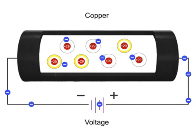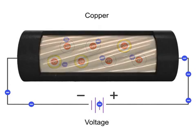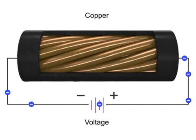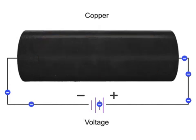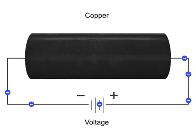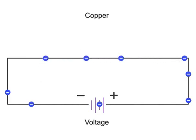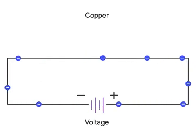Materials that have free electrons and allow electrical current to flow easily are called conductors. Conductors, such as copper, have low resistance to electrical current flow and thus are used extensively in electrical circuits.